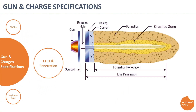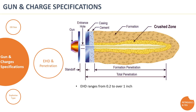Finally, the entrance hole diameter and the penetration of the created perforation represent the inside diameter of the created tunnels and how deep they go through the rock. Typically, the entrance hole aperture ranges from 0.2 to over 1 inch, and penetration ranges from 5 to over 90 inches deep in the rock.